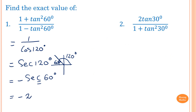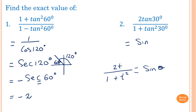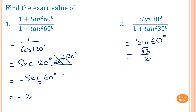Practice Q2: We know 2t/(1+t²) = sin(θ). The expression is in this form. Since θ/2 = 30°, then θ = 60°. Therefore this equals sin(60°) = √3/2. Thank you so much for watching.